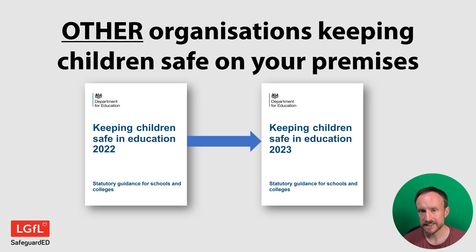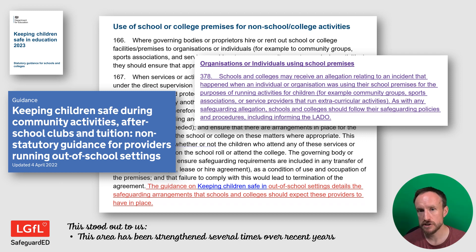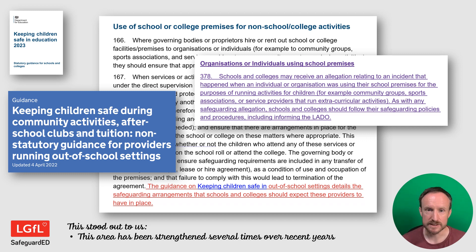For most schools, rental income for your premises will be a significant income stream. There's been a section in KCSIE about safeguarding when it comes to those organisations on your premises for a while, but there have been a couple of additions. One is to flag a helpful guidance document. Beyond that, there's an addition about where allegations might be raised to you as a school for something that happened when other organisations are using your premises — with a reminder to follow your standard policies and also to inform the LADO, who will be of invaluable help. Consider whether there's something in your policies that you need to change.